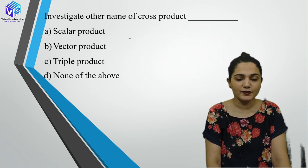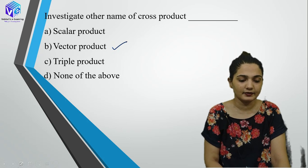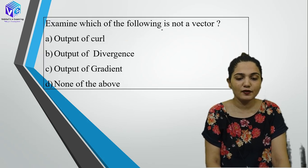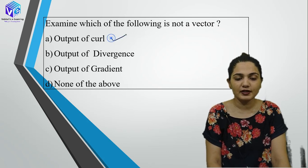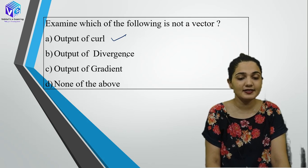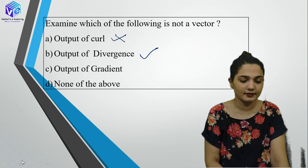The other name of cross product is vector product — we all know this. Examine which of the following is not a vector: output of a curl is a vector, but output of a divergence is not a vector — it is a scalar. So the correct answer is output of a divergence.